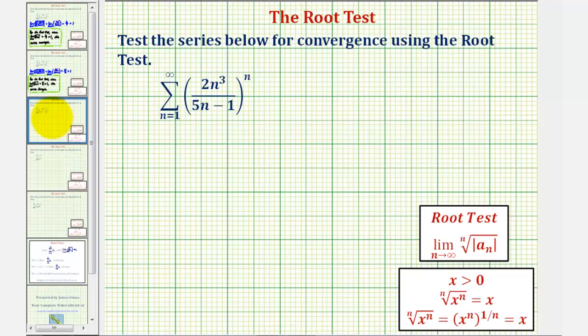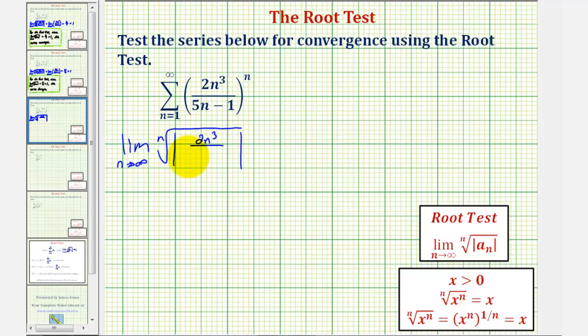So the root test is an appropriate test for this infinite series because notice how the formula to generate the terms of our series is raised to the nth power. So we'll take the limit as n approaches infinity of the nth root of the absolute value of two n cubed divided by the quantity five n minus one, and this is raised to the nth power.